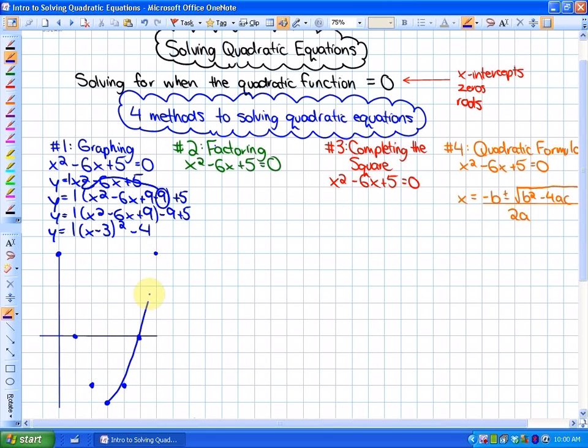So in this case, you can see that the values of x that make this function equal to zero are x is equal to 1 and x is equal to 5.